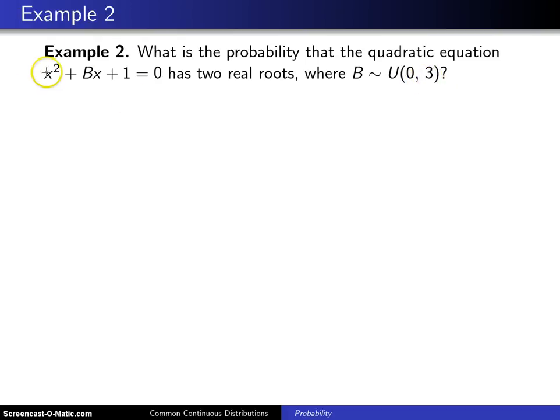You're used to quadratic equations that have constant coefficients. This is kind of an unusual quadratic equation in that one of the coefficients happens to be a random variable. So first of all,